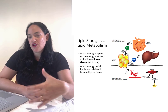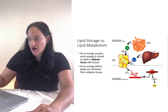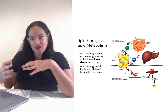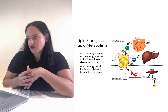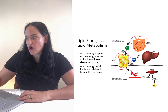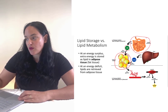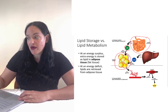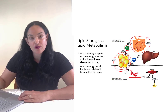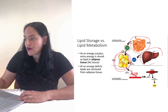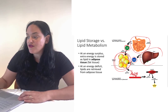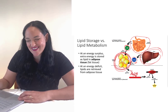The main way we store energy on the body is in the form of lipids. Our lipids are stored within fat cells or adipocytes, which are collectively known as adipose tissue. From the small intestine, chylomicrons are our lipid delivery system, and one of the tissues they can deliver lipids to is adipose tissue. The liver also makes another lipoprotein called VLDL, which is the main way we transport lipids from the liver to different tissues like our fat cells.